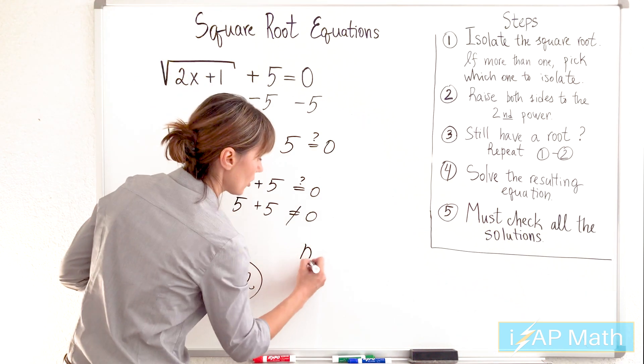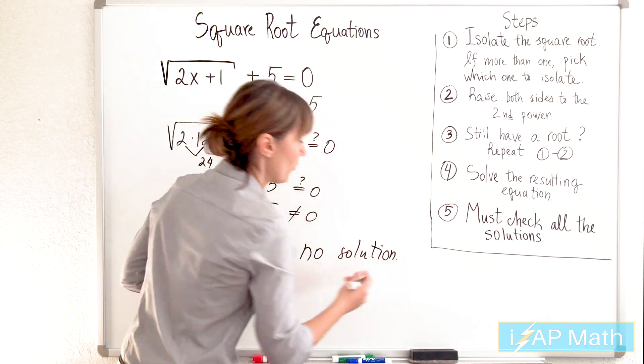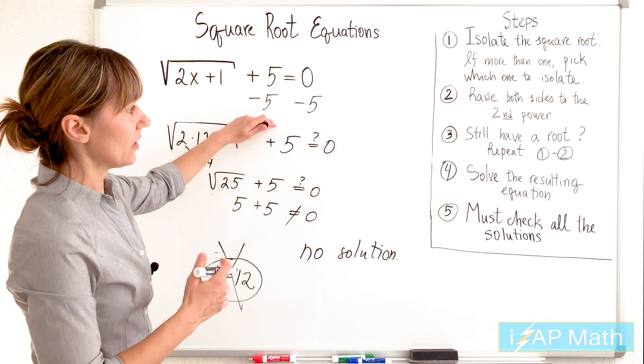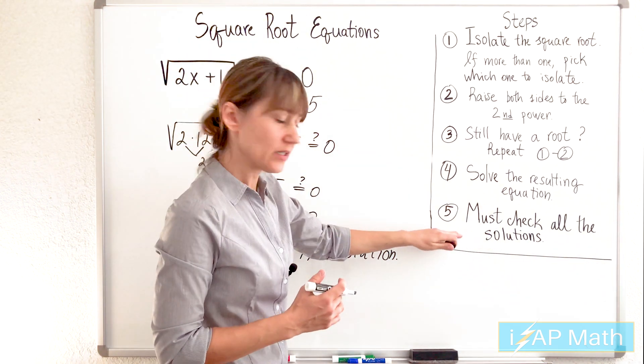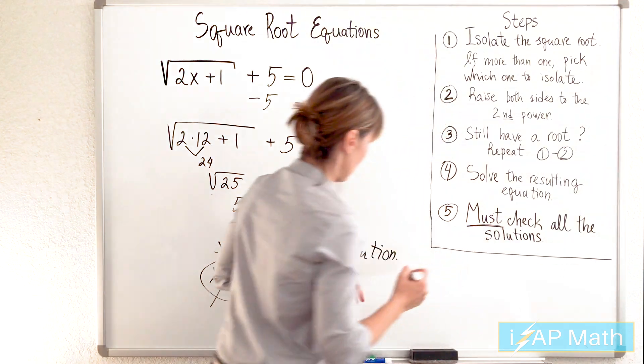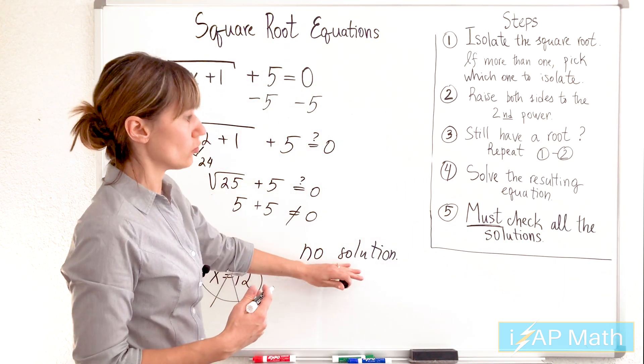It means we have no solution. No solution. You see, whether we made an observation in the beginning or whether we follow the steps, all the steps till the very end, and we must check the solutions, we see we still produce the correct answer, which is no solution.